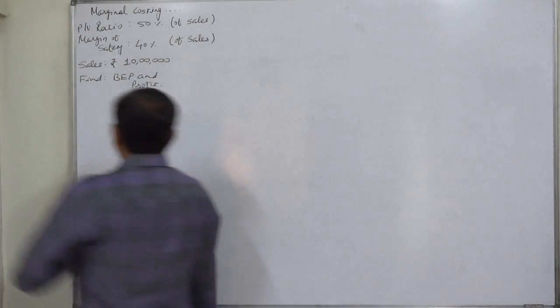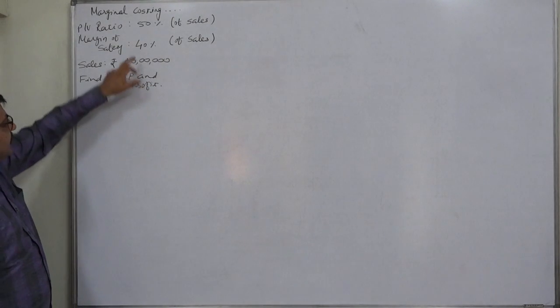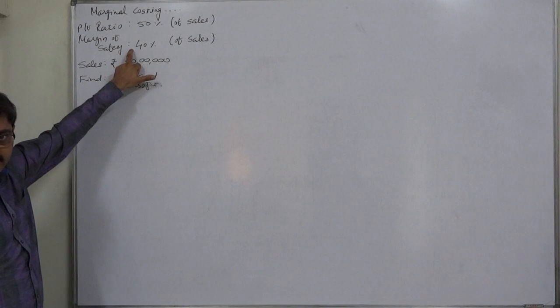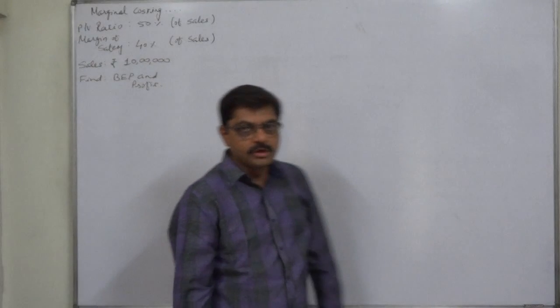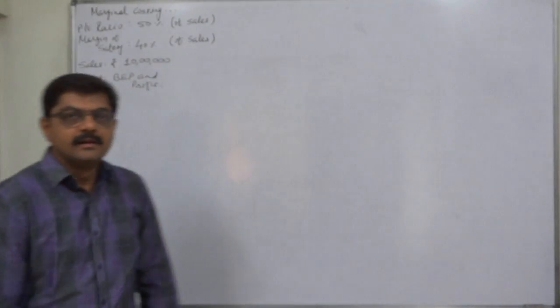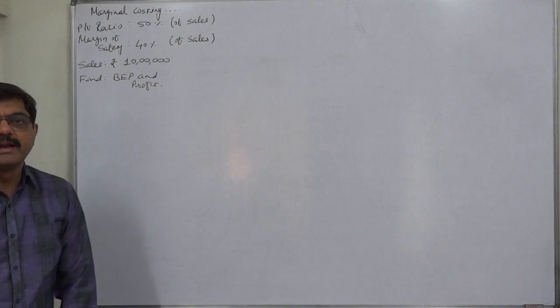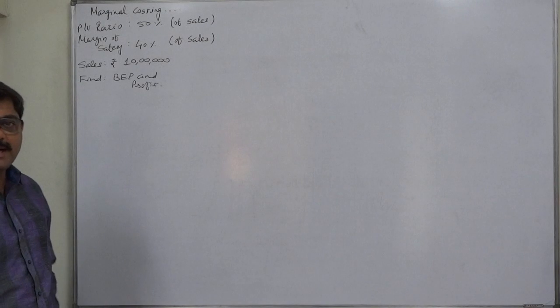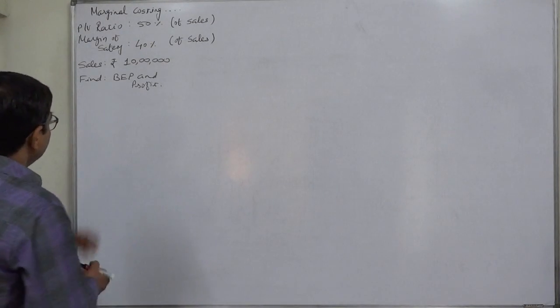Now, we need to find out BEP and profit. We know that BEP has direct relationship with margin of safety. The formula of margin of safety is sales minus BEP. If we substitute quantities of sales and BEP, then margin of safety can be in quantity or number of units. Similarly, if we substitute values of sales and BEP, then margin of safety will be in terms of value or currency.